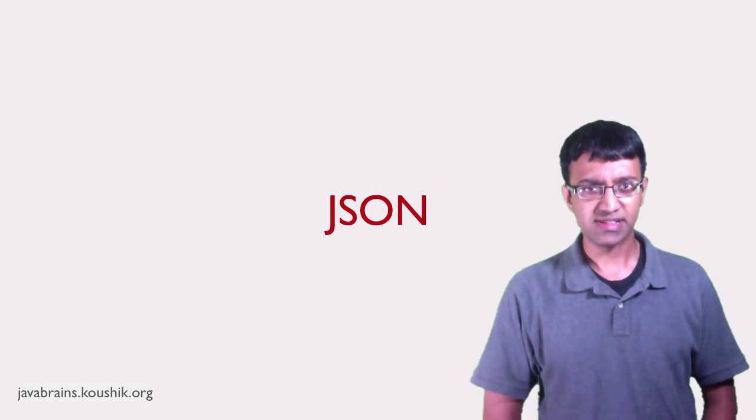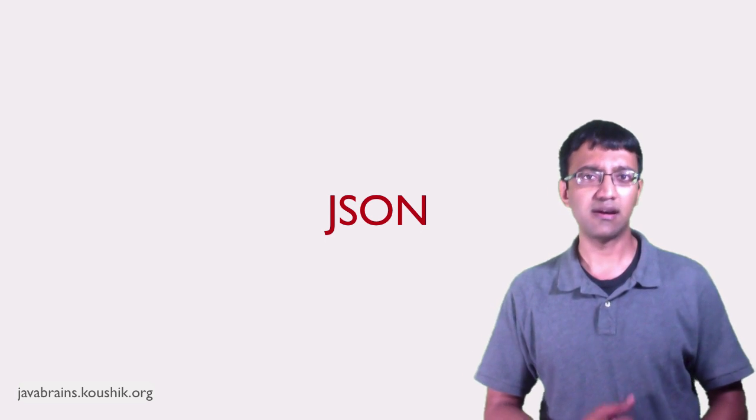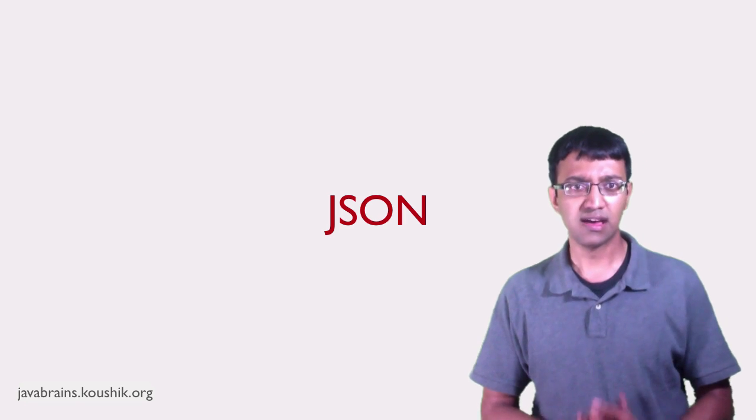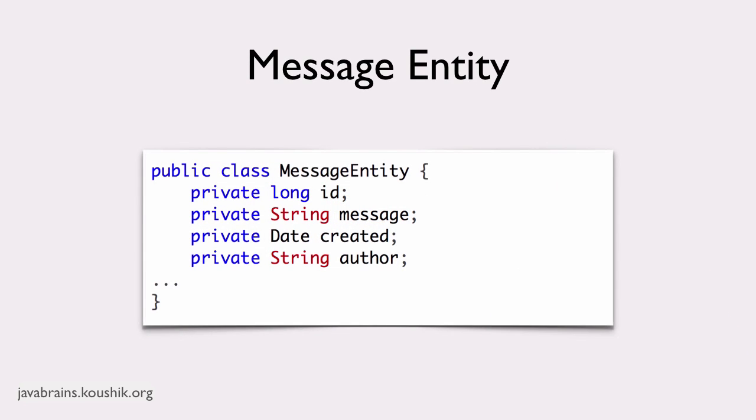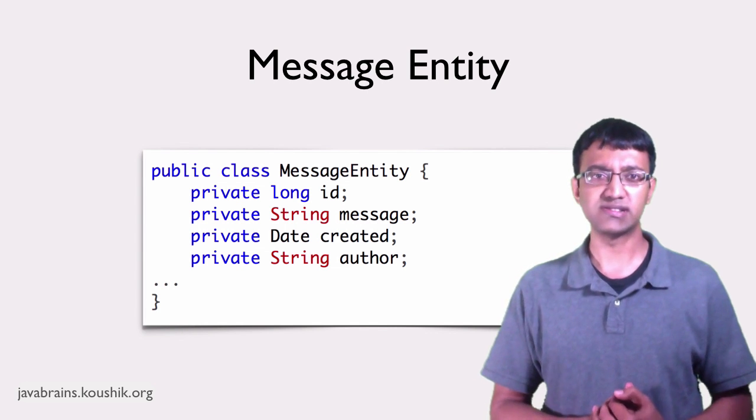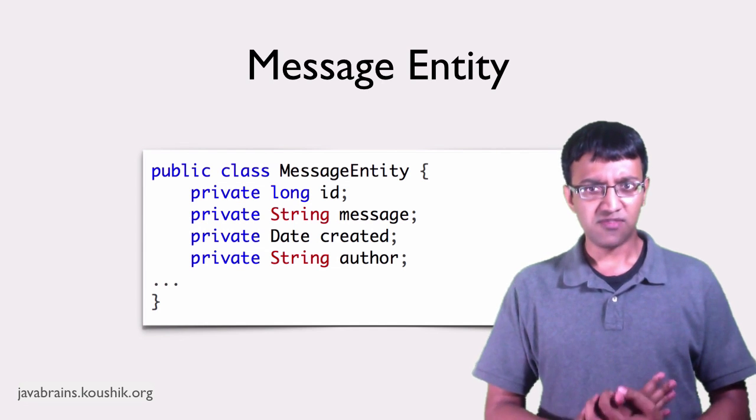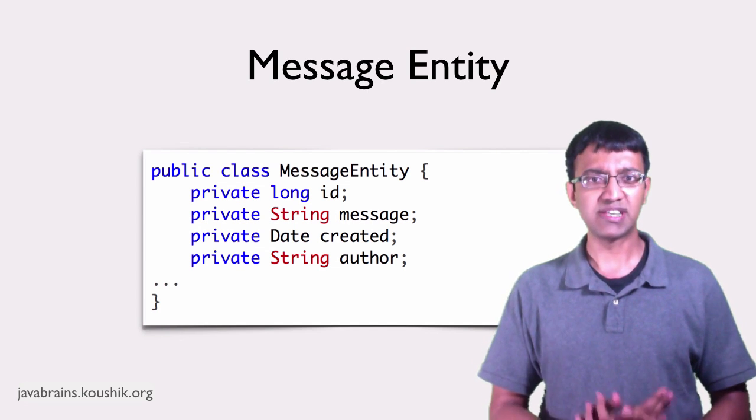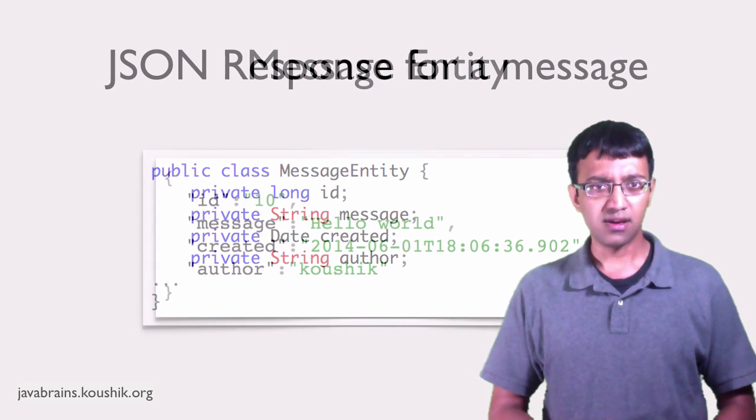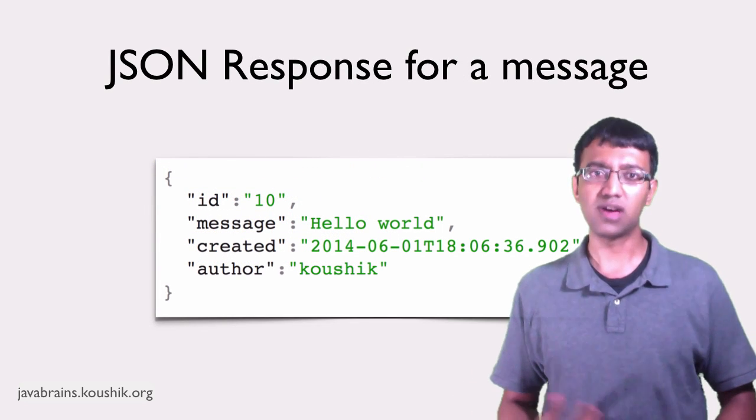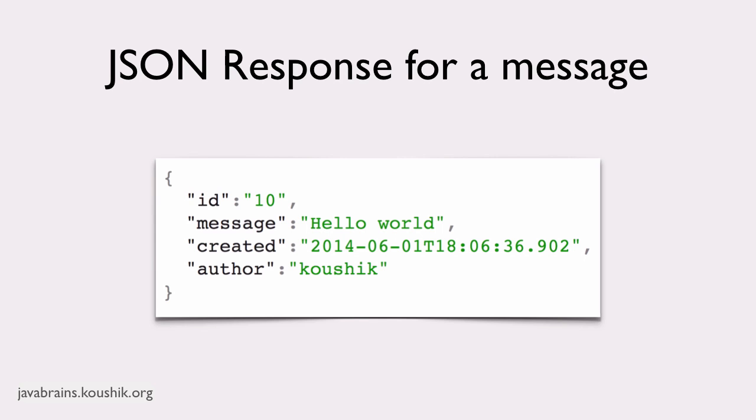So let's look at the format itself. Let's say our message entity class has these four member variables: the ID of the message, the text of the message, when it was created, and who created it. When a GET request is made for a specific message, say message ID 10, the JSON that you would return to the client would look something like this, with the four properties and values for each of those properties.